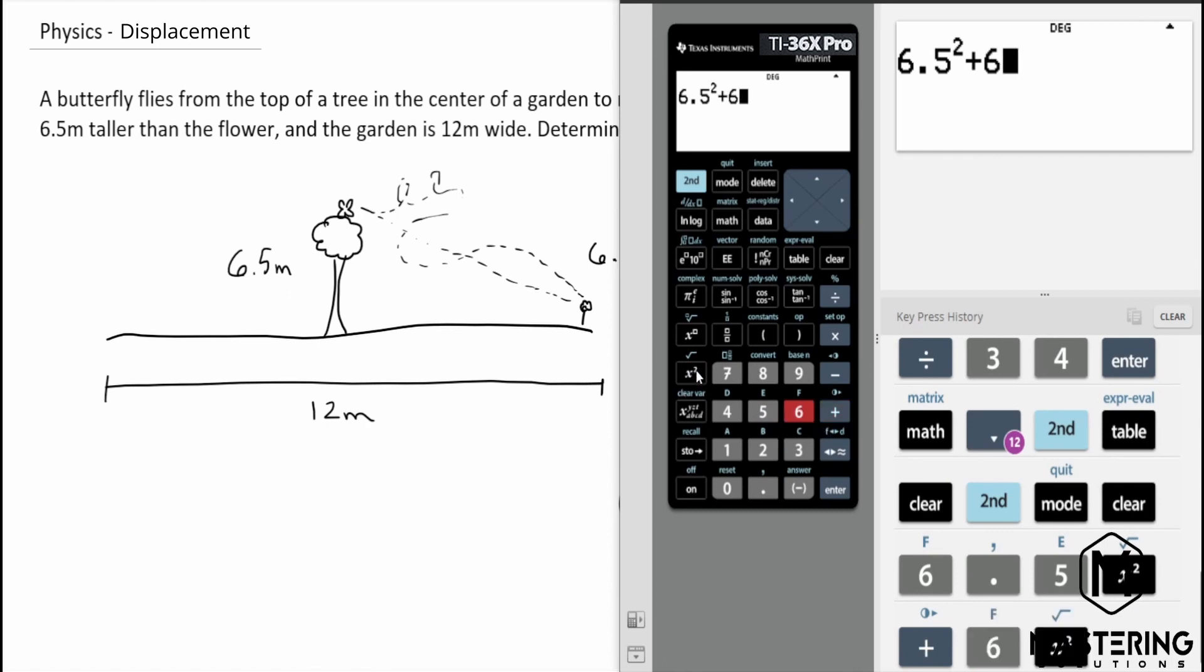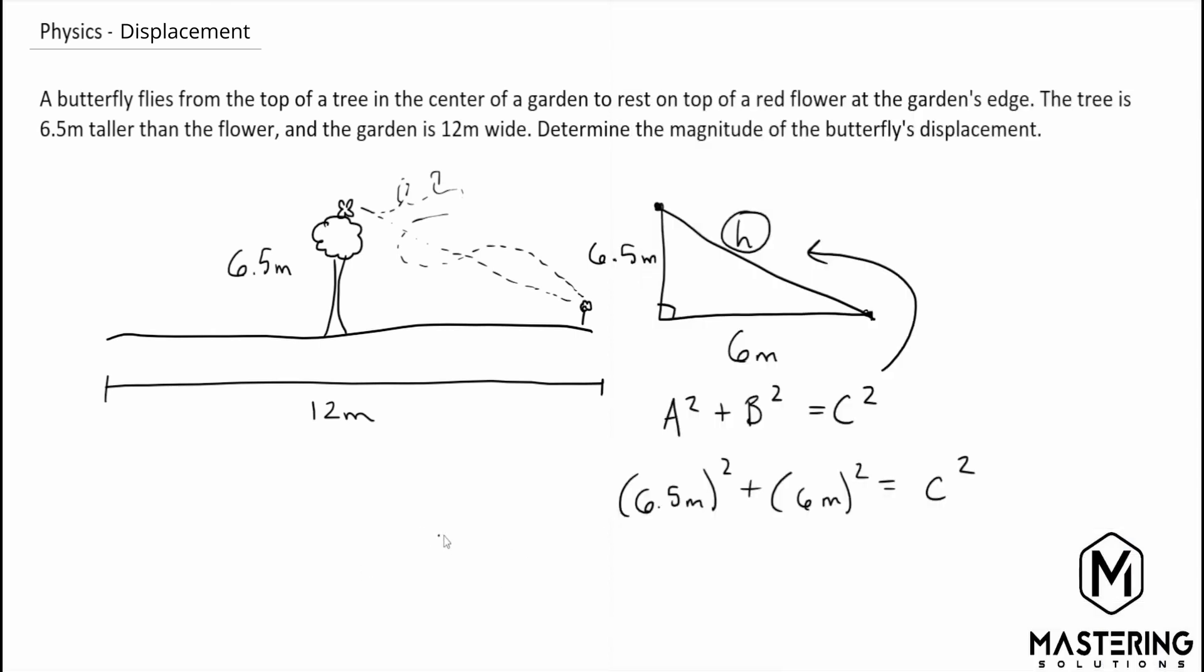So we have 6.5 squared plus 6 squared and then when we do that we're left with 78.25. So 78.25 meters squared is equal to c squared.